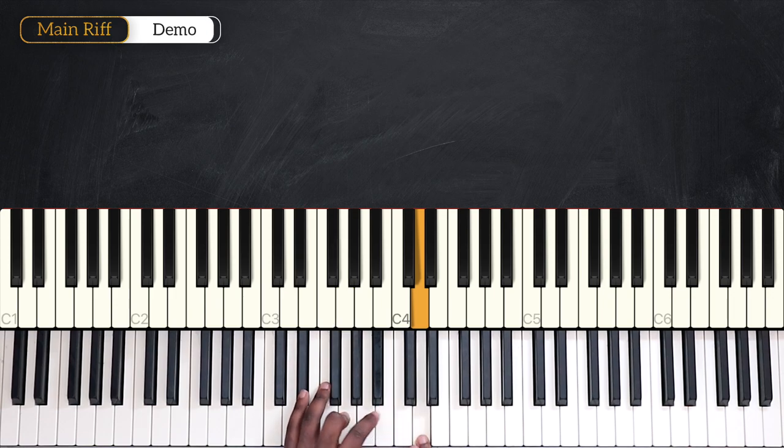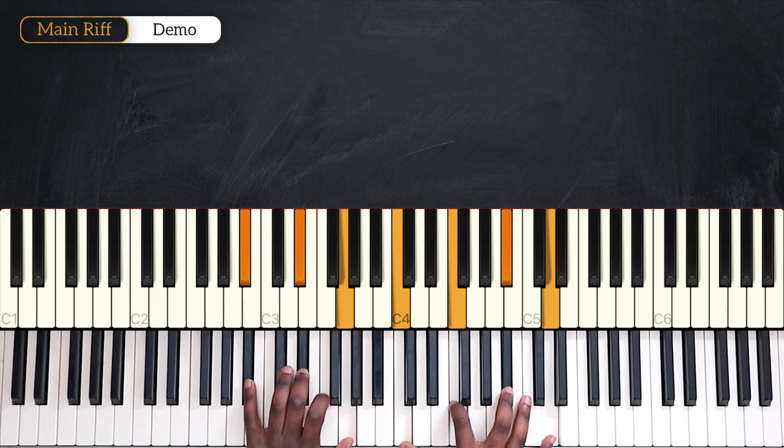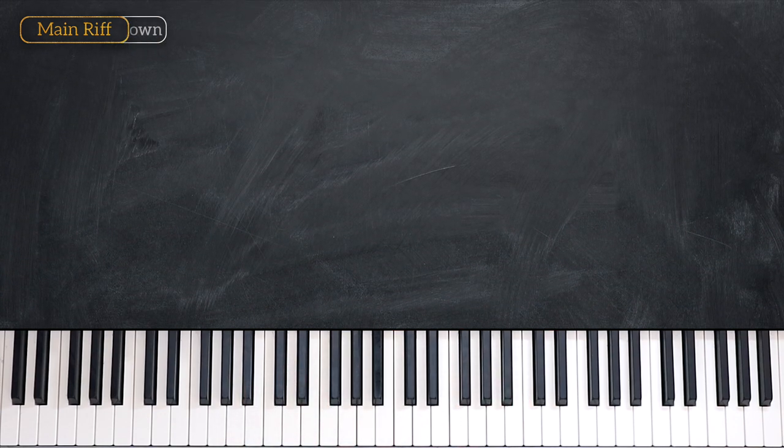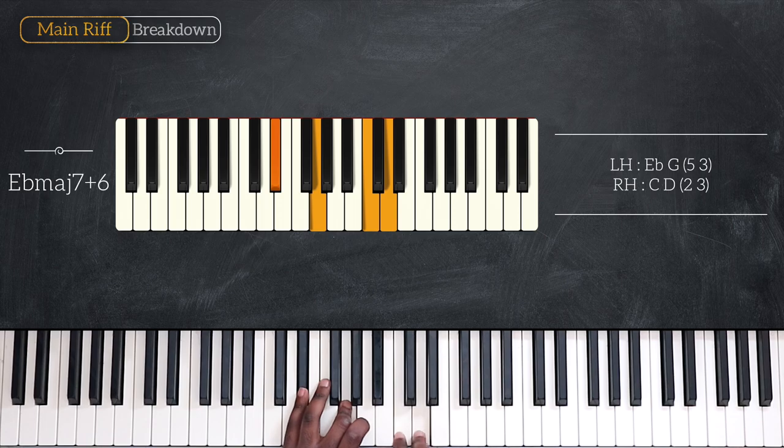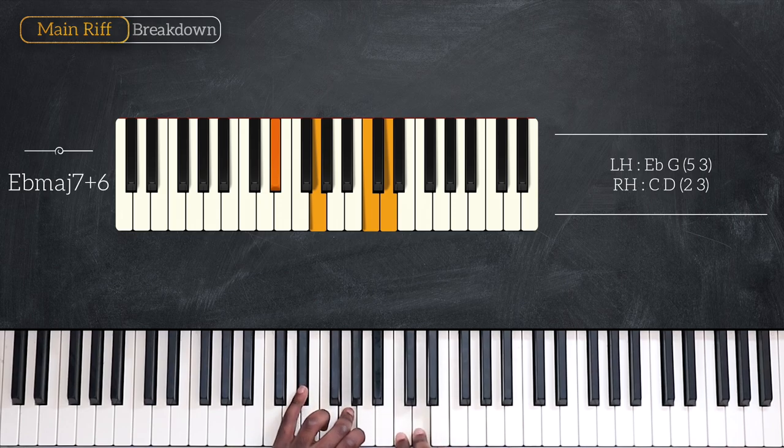What I just played was the main riff that we're going to use for most part of the song. We're going to play here in the key of Eb major. Starting it, we have Eb major 7 at 6. Playing two notes on each hand: Eb and G for the left, C and D for the right hand.